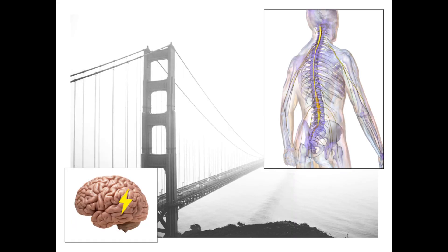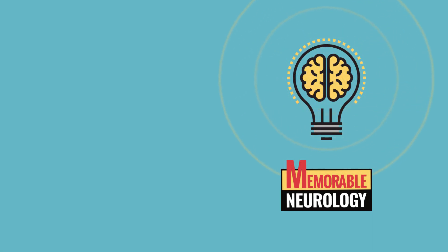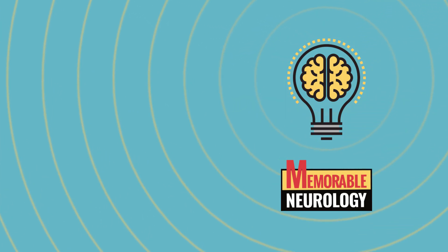After the medulla, the brainstem ends and the spinal cord officially begins, meaning we have officially crossed the bridge from the brain to the spinal cord. Come back for the next video where we will cover the spinal cord in more detail. Thanks for watching — if you've been enjoying the video series, consider checking out the book Memorable Neurology or subscribing to the channel. Good luck in your studies.